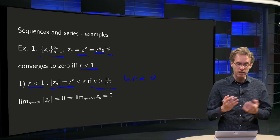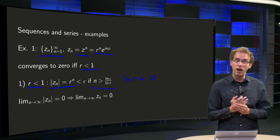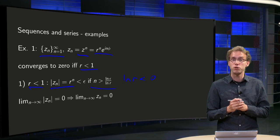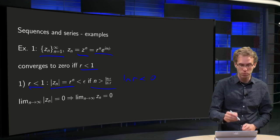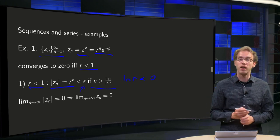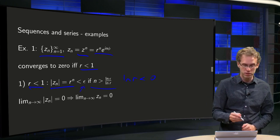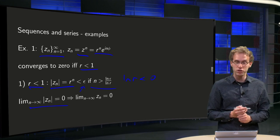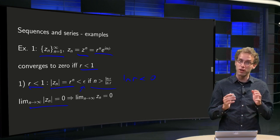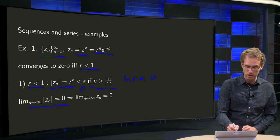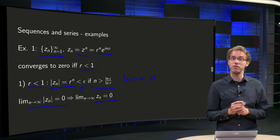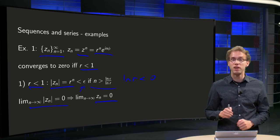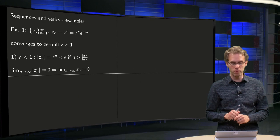So we can get the norm of z_n as small as we like, smaller than any ε. This means the limit as n goes to infinity of z_n equals 0, and if the norms go to 0 then the complex numbers themselves do as well, so in this case the sequence converges to 0.